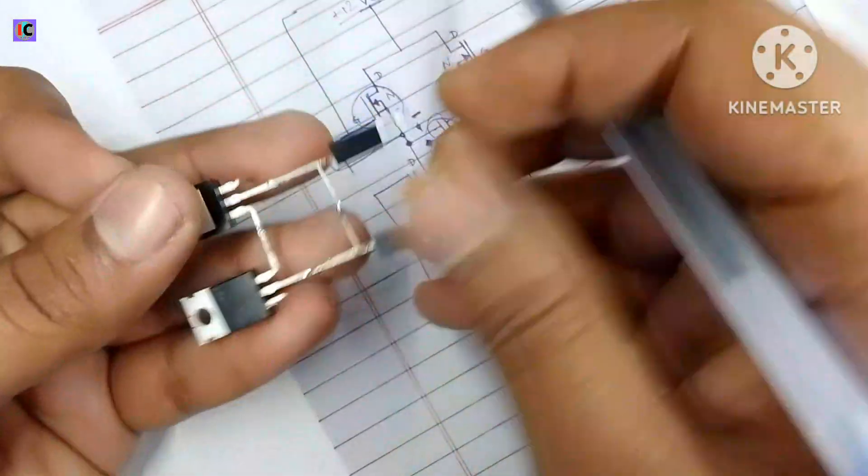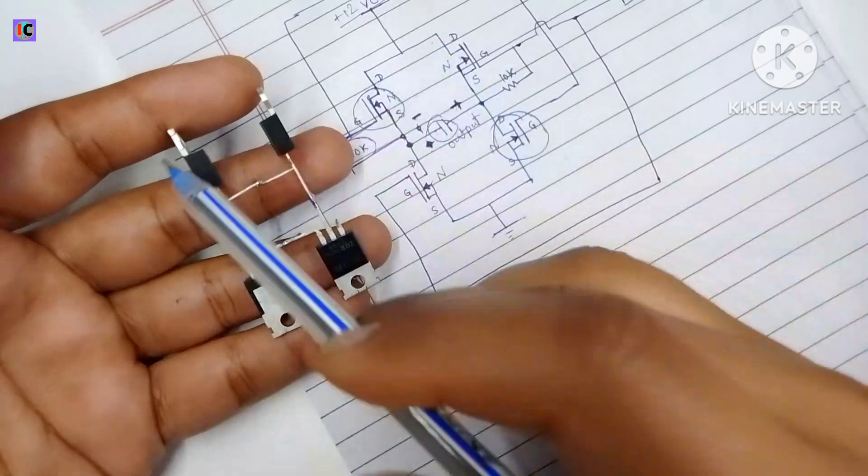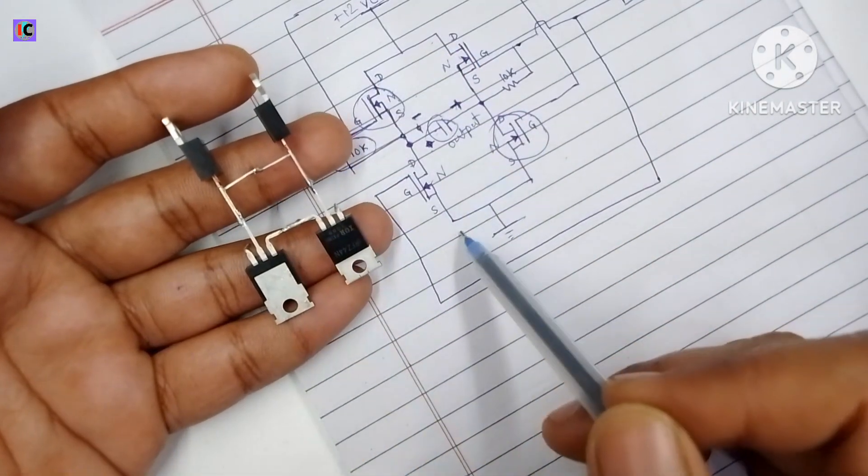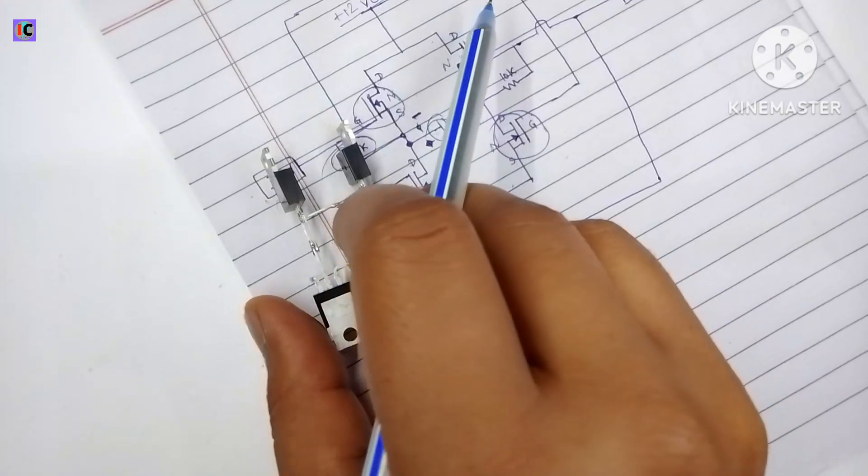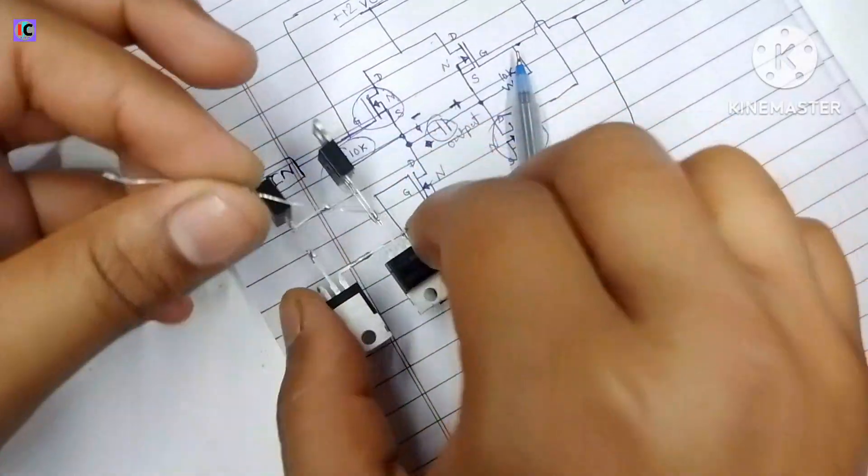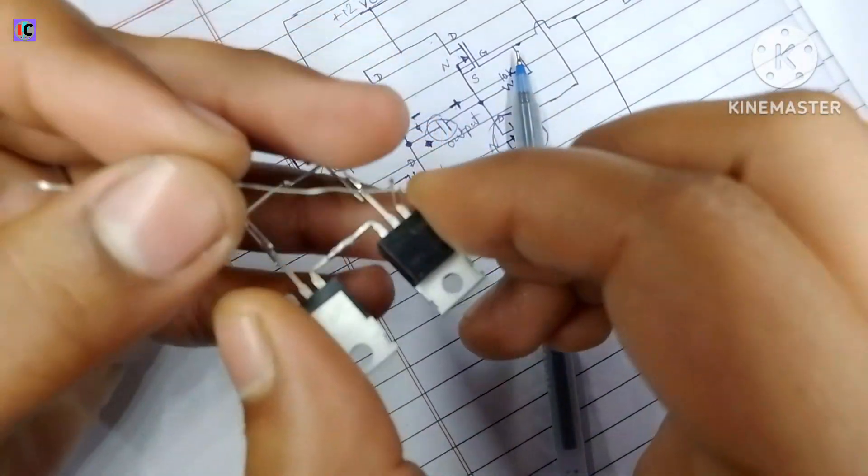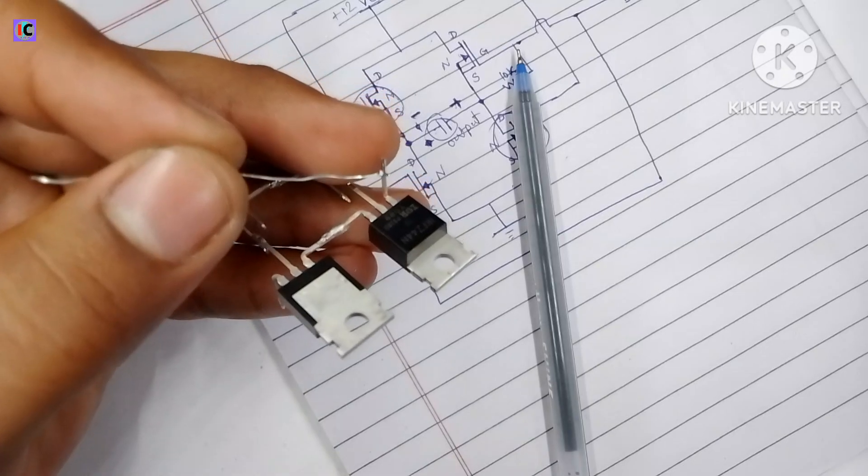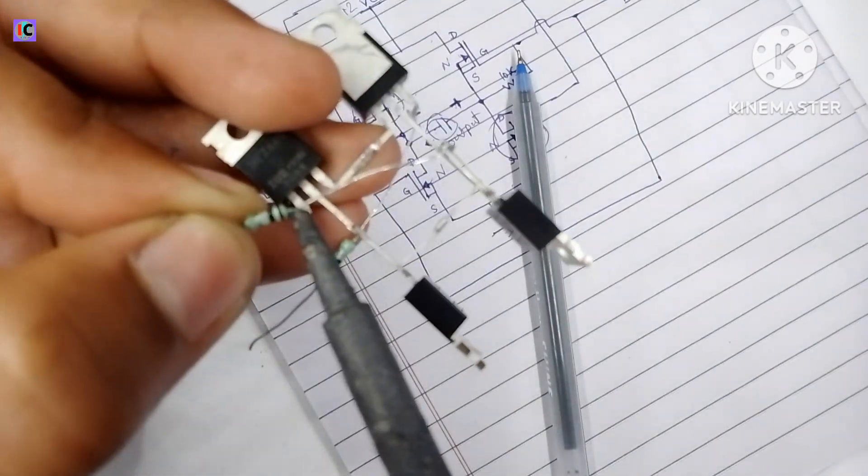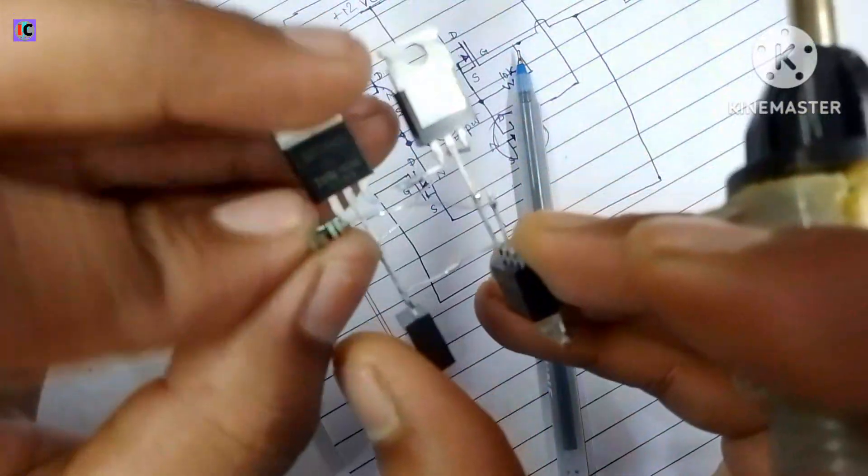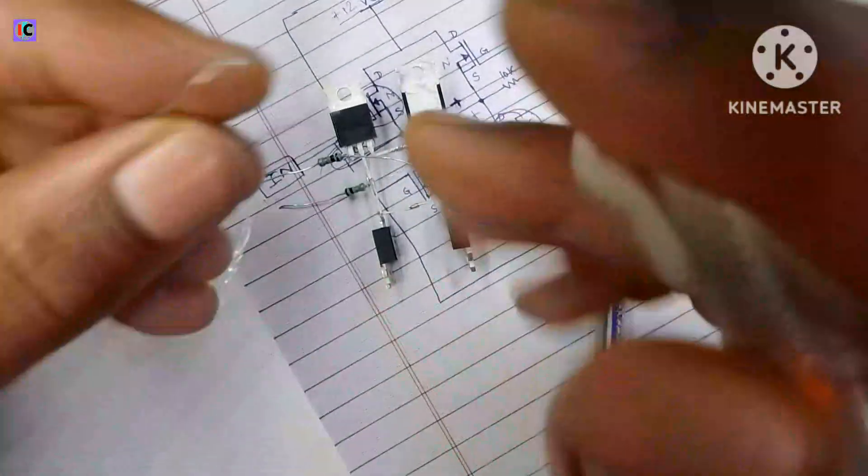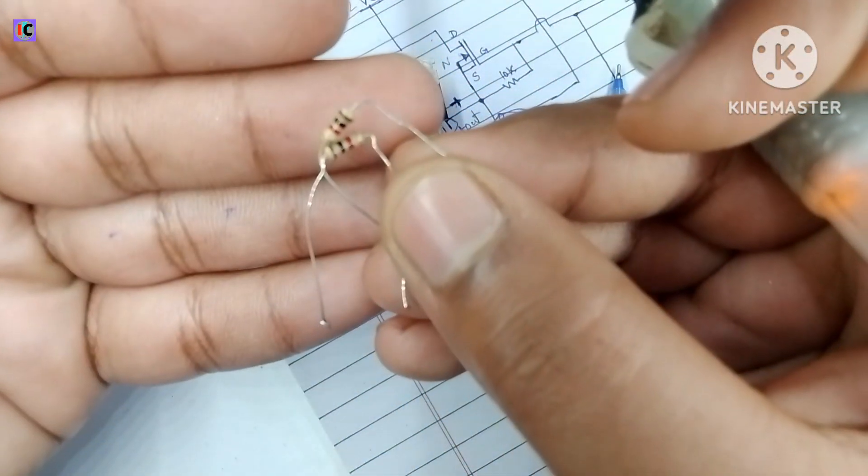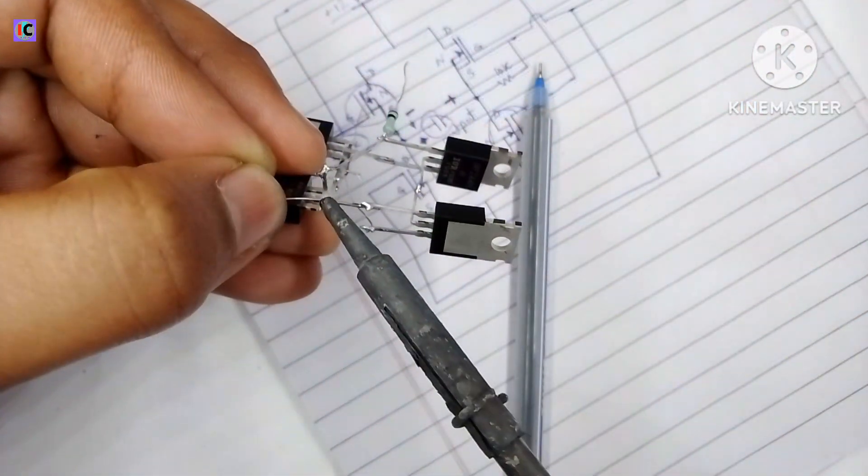I've made the N-channel MOSFET H-bridge, and you can see it looks the same as I have drawn on the circuit. Let's see the connections. I am connecting the diagonal MOSFETs which have the negative and high side. I am connecting the gate pins of the negative and positive side MOSFETs.